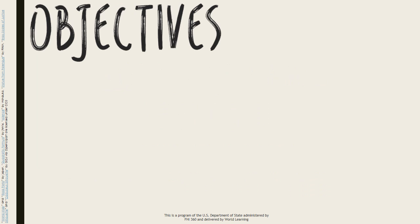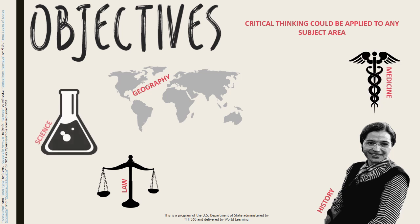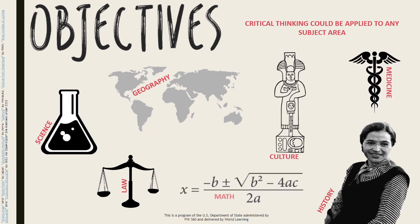When we set learning objectives, we generally have in mind specific content and information that students will be working with. Since critical thinking involves thinking processes that could be applied to any subject area, critical thinking processes might at first seem too abstract to describe as observable behavior. However, the fact that critical thinking is not specific to any particular topic can free us to include critical thinking exercises in almost every area that we teach.